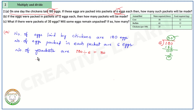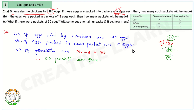So, number of packets equals 180 divided by 6, which is equal to 30. Therefore, 30 packets are there. This is the first part.